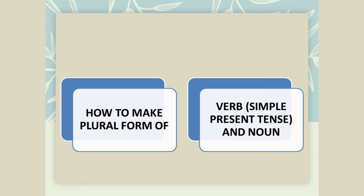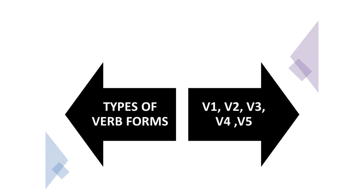The next topic is how to make plural verb forms from the simple present tense, or from the simple verb forms, and how to change the singular noun form into plural noun form — V1 ko hum V5 mein kaise change karein? Ya singular noun ko plural noun mein kaise change karein? So let's see that. It is very very simple.